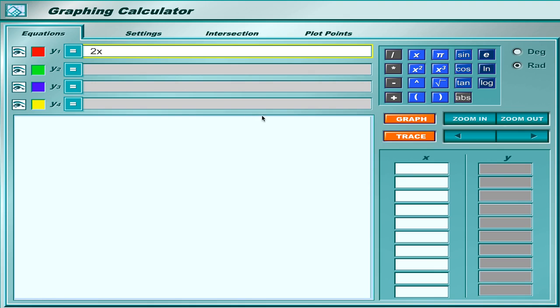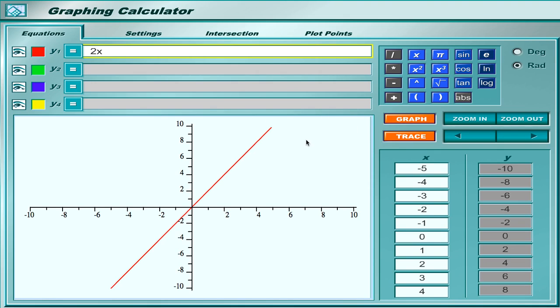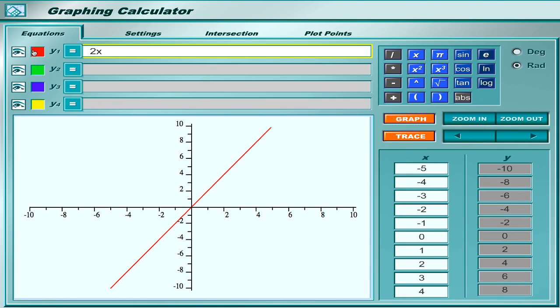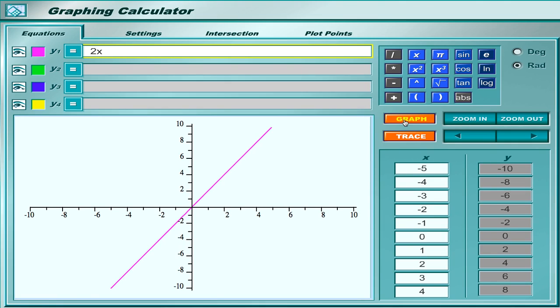Once I have my equation, I would hit graph and what you'll see is a black coordinate plane with a red line. Now if you notice, my y1, my first equation, has a red color here. If I were to change this color, it would change the color of my graph. If I made it purple and I hit graph, it would show a purple line.